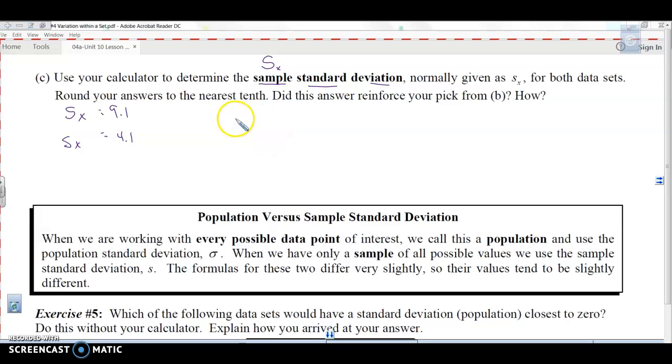This was an example about preferences for soda. You can't choose everybody in the entire world to do your population and figure out a standard deviation for it, so what you have to do is pick a sample. The calculation is a little bit different for it, but the calculator does the work for us.